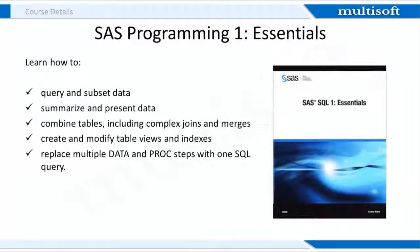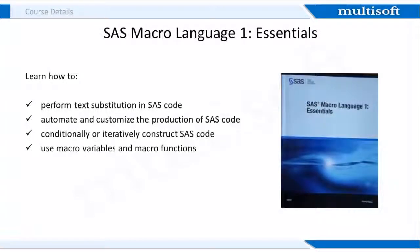A study of the SAS Programming 1 Essentials course book will equip candidates with querying data, summarizing and presenting data, combining tables, modifying table views, and replacing multiple data and proc steps with one SQL query. The second book, SAS Macro Language 1 Essentials, provides expertise in performing text substitution in SAS code, automating and customizing the production of SAS code, conditionally or iteratively constructing SAS code, and using macro variables and macro functions.